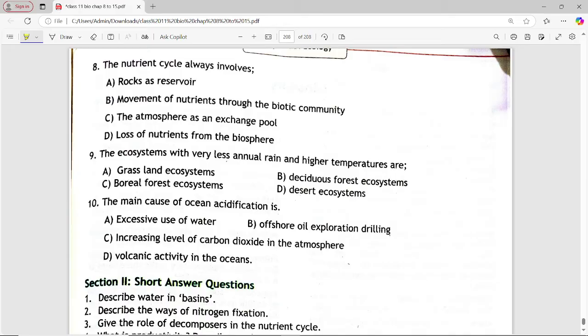The ecosystem with very less annual rain and higher temperature are, options are grassland ecosystem, deciduous forest ecosystem, boreal forest ecosystem, desert ecosystem. Answer is option d, desert ecosystem.